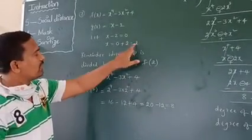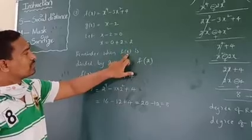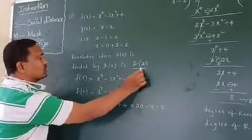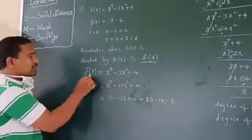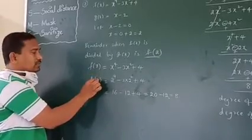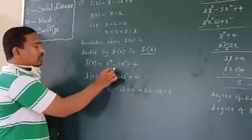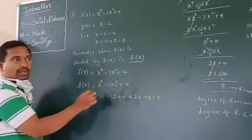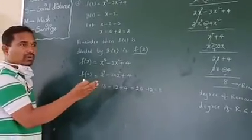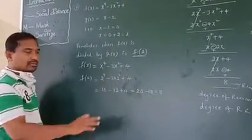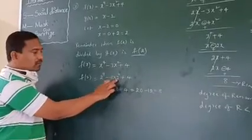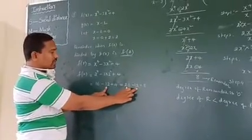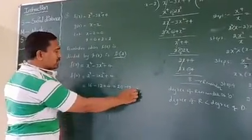We got x equal to 2, so write f of 2. Now let us find the remainder. Take f of x and substitute x equal to 2, replacing x by 2. So 2 to the power 4 minus 3 times 2 squared plus 4. 2 to the power 4 is 16. 3 times 2 squared is 3 times 4 equals 12. So 16 minus 12 plus 4 equals 20 minus 12, which is 8. This is the remainder.